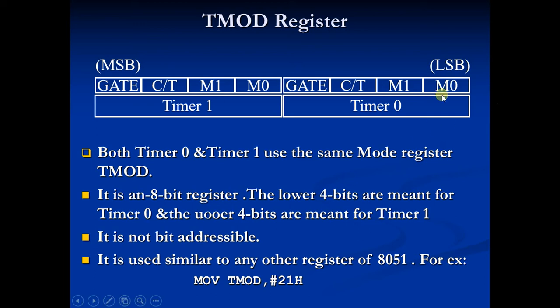As you can see, there are M0, M1, and C/T gate bits. The same bits exist for Timer 1. C/T means counter or timer — you can select either one.